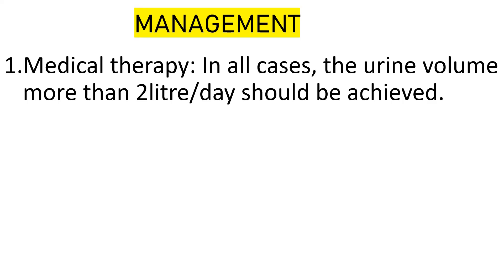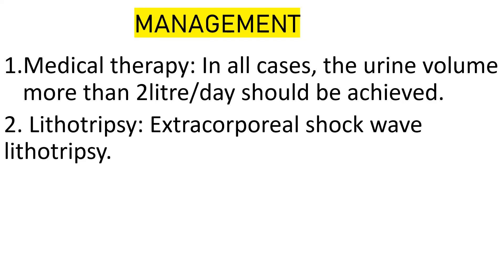In all cases, the urine volume of more than two liters per day should be achieved. Normally, the amount of urine we excrete every day should be two liters or more per day. If we can't achieve this, there is some problem, obstruction, or complication affecting our kidney. This is how we manage urine volume.